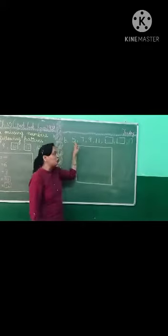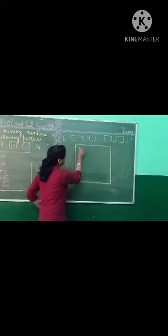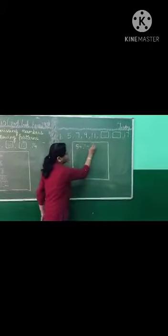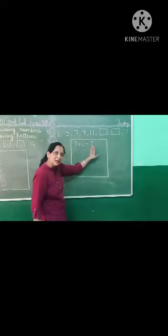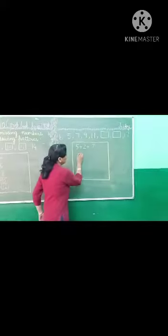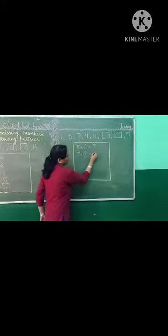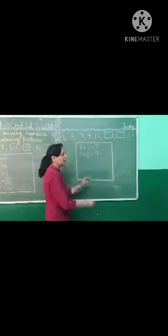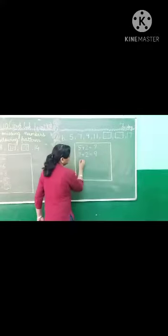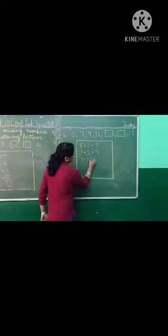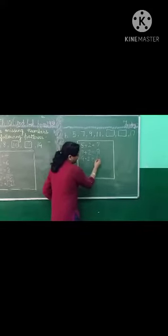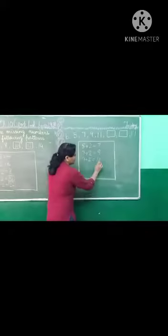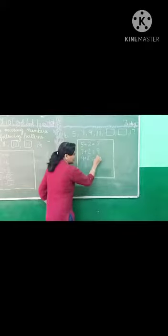So again, now add 2 in 5. 5 plus 2, 7. Now add 2 in 7. 7 plus 2, 9. Now we will add 2 in 9. 9 plus 2, 11.